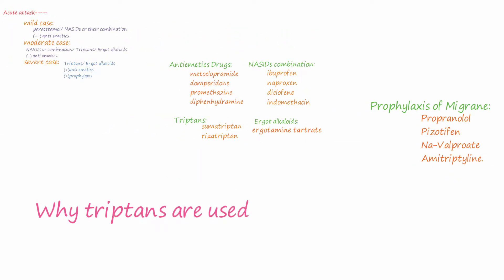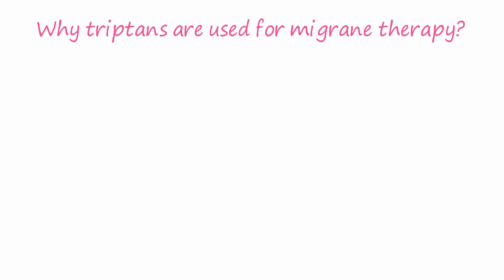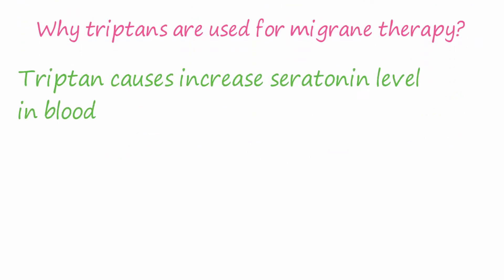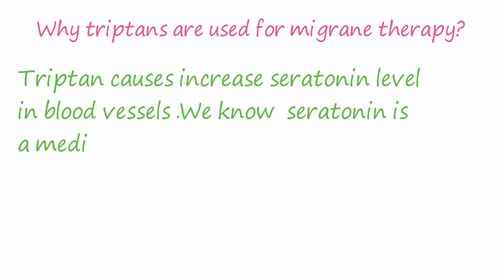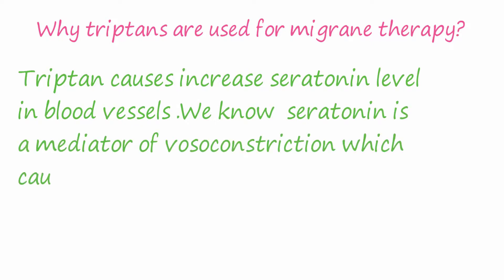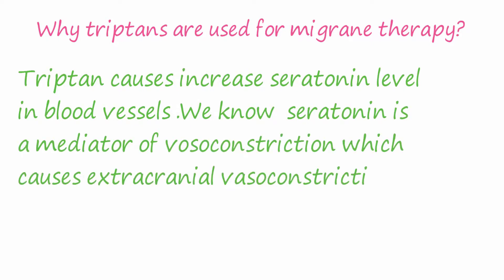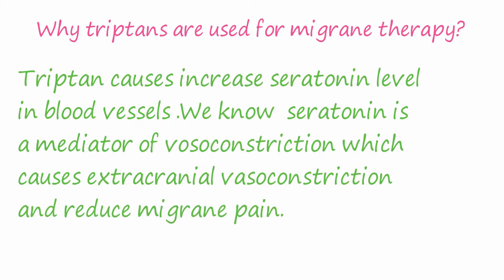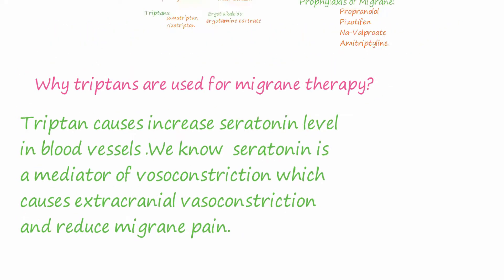Why are triptans used for migraine therapy? Triptans cause increased serotonin levels in blood vessels. Serotonin is a mediator of vasoconstriction, which causes extracranial vasoconstriction and reduces migraine pain. And that's all.